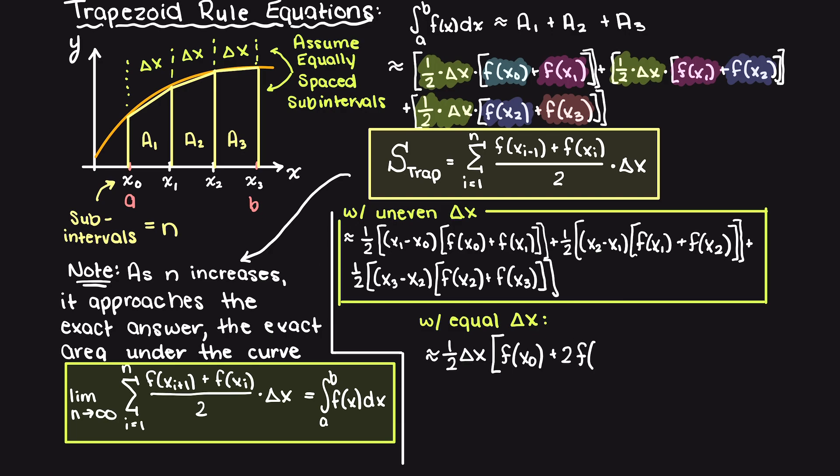As you can see, all of the internal x values, so x1 and x2 in this example, appear twice as they are used in both neighboring trapezoid area calculations, whereas our external data points, so x0 and x3, only appear once. Therefore, with equal spacing, we get a much simpler looking equation that looks like this.